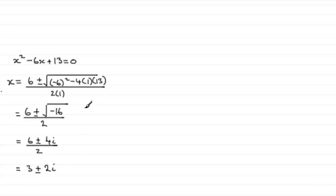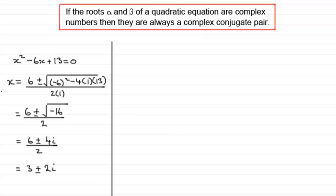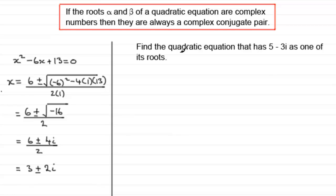And this always happens with quadratic equations that give rise to complex roots. So what I'm saying is that if we've got the roots alpha and beta of a quadratic equation and they turn out to be complex numbers, then they are always a complex conjugate pair. We can use this concept to help us do some questions. For instance, suppose we are asked to find the quadratic equation that has 5 minus 3i as one of its roots.